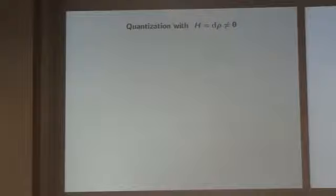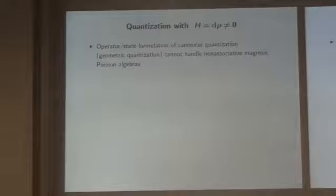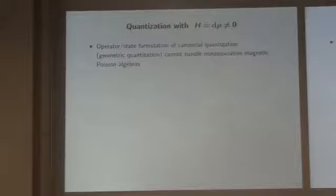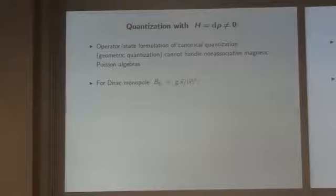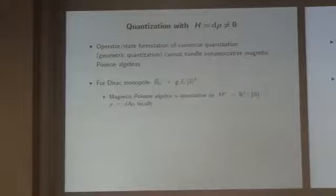Now how do we deal with the case when there's a twist in the Poisson structure? This approach cannot handle non-associative magnetic Poisson structures, simply because we can't have non-associativity when acting with operators on a Hilbert space. What about the Dirac monopole? We never hear about problems with quantizing the Dirac monopole using standard methods — that's because you look at a different configuration space, excising the location of the monopole, so the algebra is associative on this punctured space.